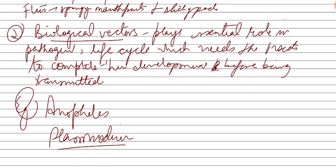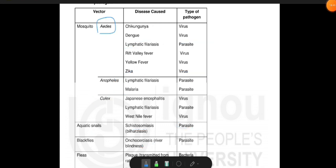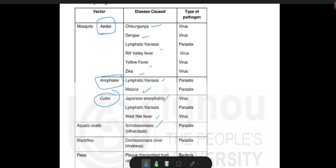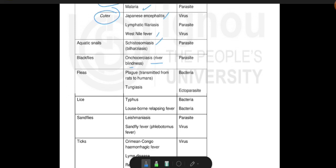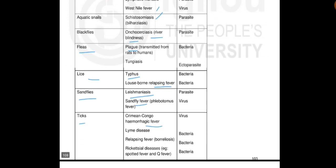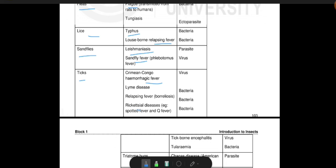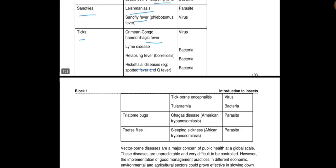Important examples of biological vectors include: Aedes mosquito, which causes chikungunya, dengue, lymphatic filariasis, yellow fever, and Zika virus. Anopheles mosquito mainly causes malaria and also lymphatic filariasis. Culex can cause Japanese encephalitis and West Nile fever. Aquatic snails cause schistosomiasis. Black flies cause river blindness. Fleas are vectors in plague. Lice are vectors for typhus fever and relapsing fever. Sandflies cause leishmaniasis and sandfly fever. Ticks cause Crimean-Congo hemorrhagic fever and Lyme disease — Lyme disease is an important and commonly asked example.